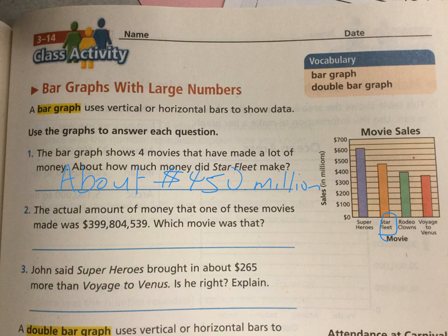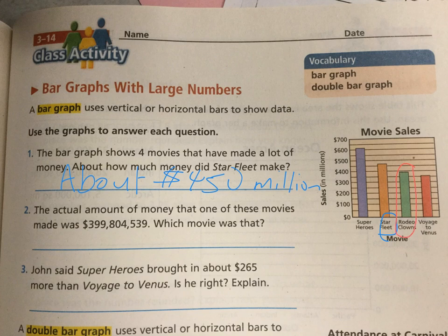The actual amount of money that one of these movies made was $399,804,539. Which movie was that? Rounding that, it's going to be really close to $400 million. So which movie is really close to the $400 million line but just below it? That would be Rodeo Clowns. See how it's just below the $400 million mark? And $399 million is just below $400 million, so we would say Rodeo Clowns.